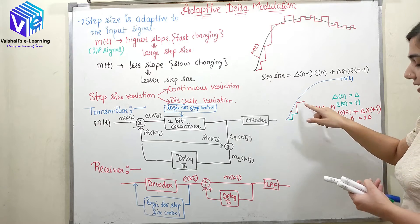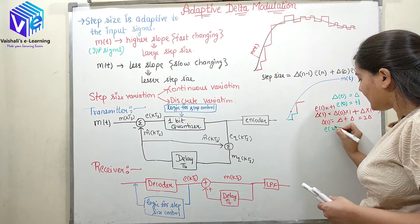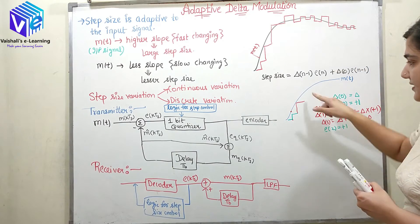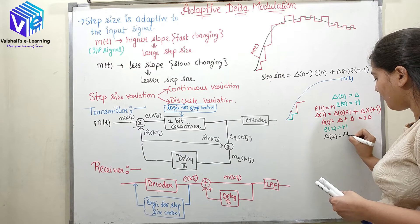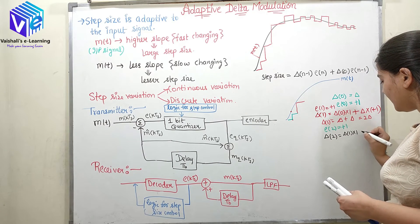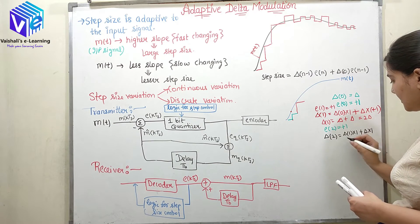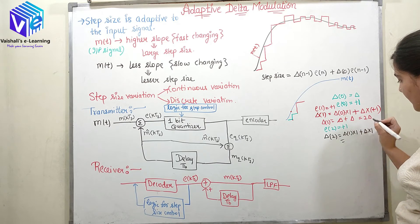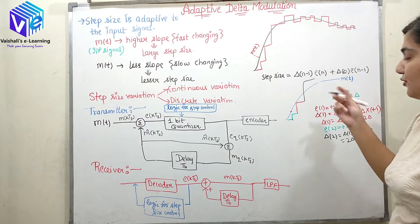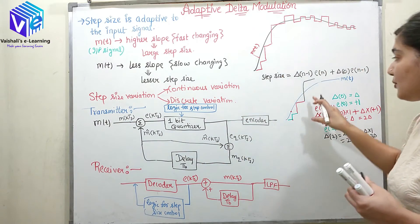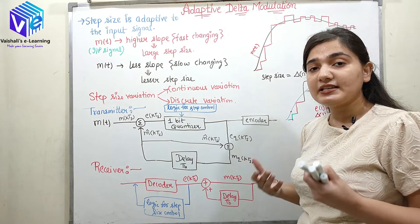Again if I see the message signal and talk about the error function: E(2) will be again plus 1, as the message signal is again on the upper side. Here if I talk about δ(2), it would be equal to δ(1) × E(n), which is 1, plus δ(0) × E(n), which is again 1. What was δ(1)? It was 2δ. So it is 2δ plus δ equal to 3δ. Again here I have 3δ. You can see the delta is increasing when the message signal is increasing — step size is increasing when I have a fast increasing message signal.